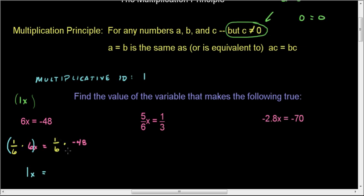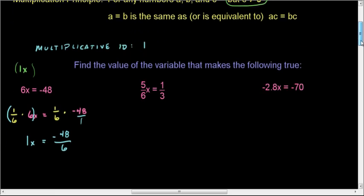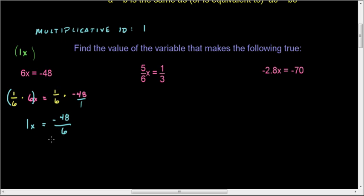And I'm going to say 1 sixth of 6 is 1x equals 1 sixth of negative 48. Well, that's really, I'm going to put this as negative 48 divided by 6. Remember that negative 48 can be written as a fraction. And when you multiply fractions, you multiply straight across.